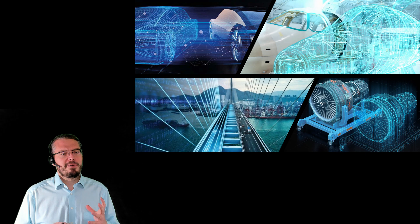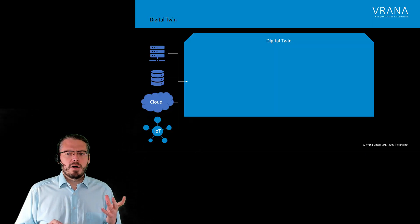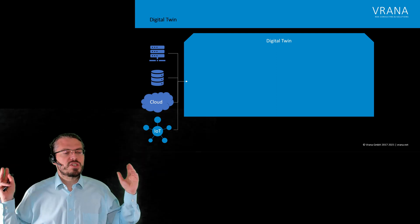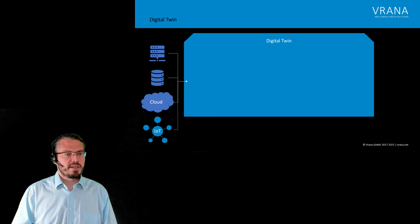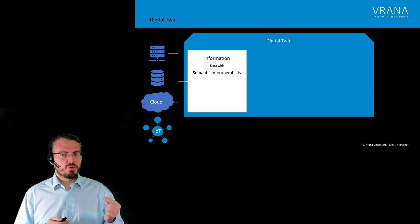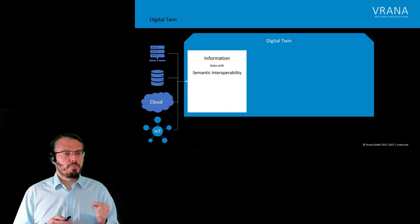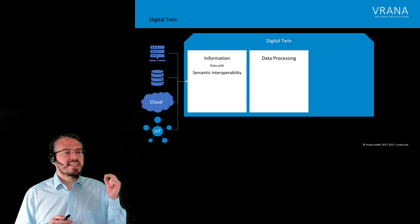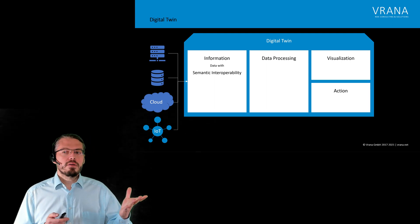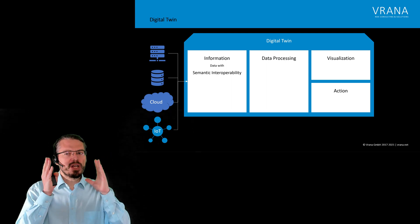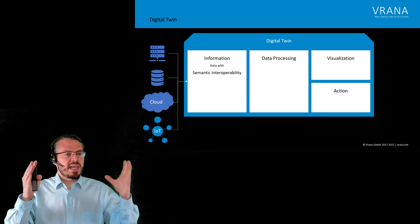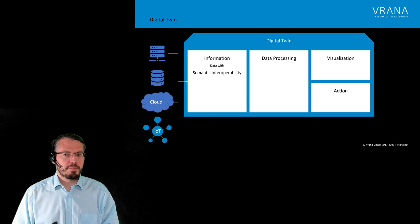Now that we know it is not just a 3D visualization, what is a digital twin? We have all kinds of data sources. We combine those data sources in the IoT and convert all the data into information using semantic interoperability. That information is exactly what we need to create a digital twin — data with semantic interoperability. We put that data into some kind of data processing, and finally we create some visualization and some action. So those are the three core elements of a digital twin: the information input, then data processing, and then an output.